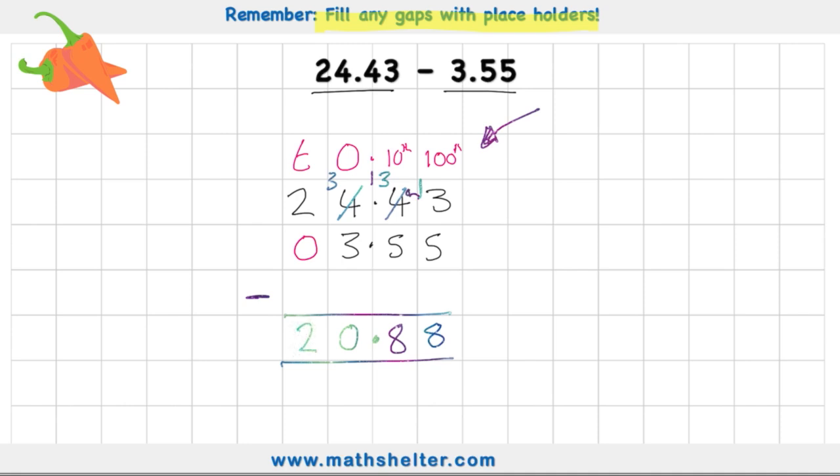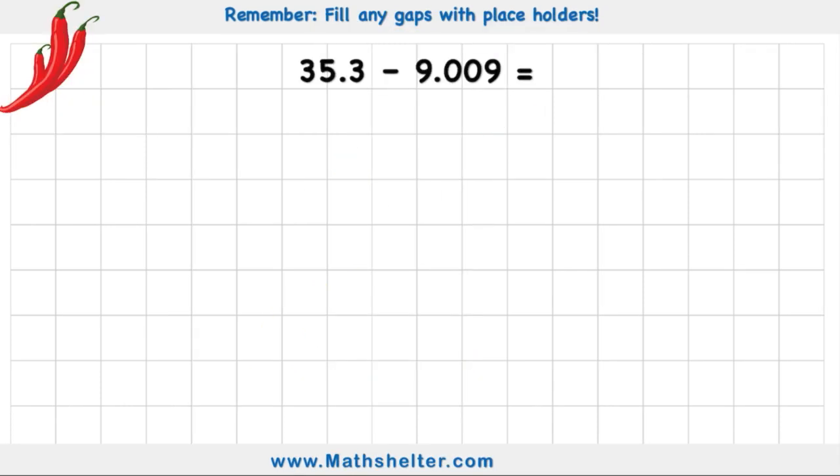So my answer to 24.43, subtract 3.55 is 20.88. Now let's see how hard this can get with a red chili challenge. I'm going to start with my column titles. Ones, tens, and this time I need tenths, hundredths, and I'm going to need thousandths. Let's begin.